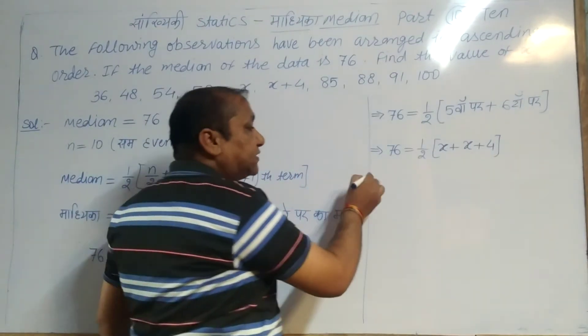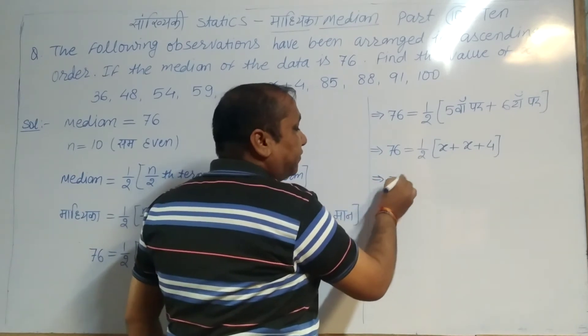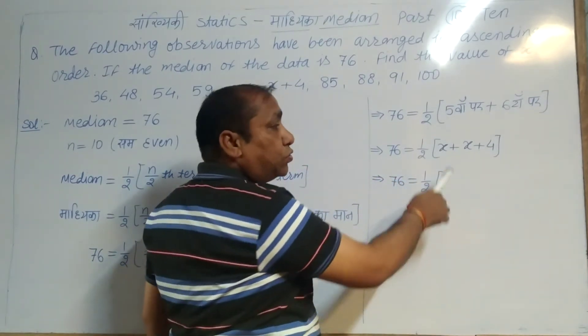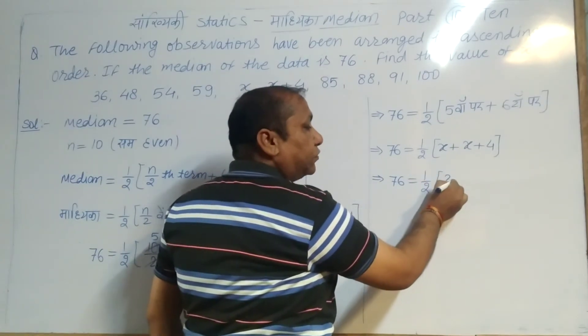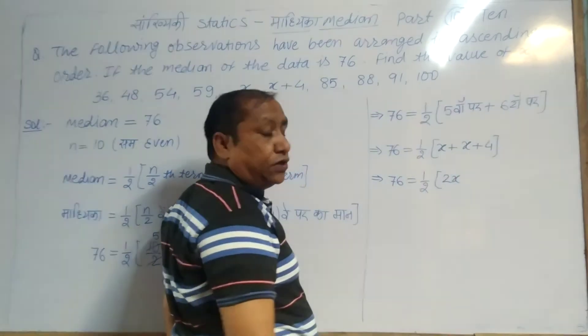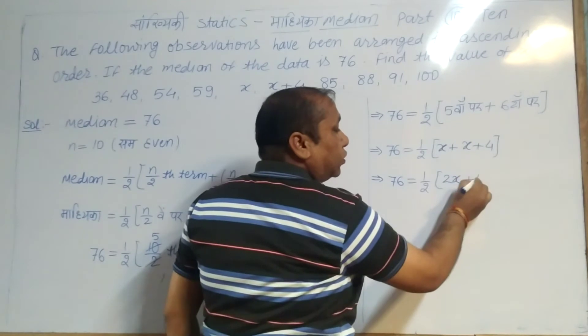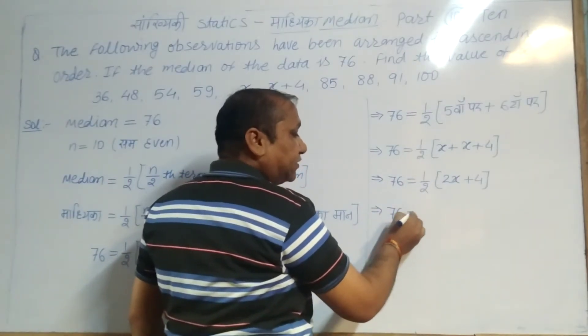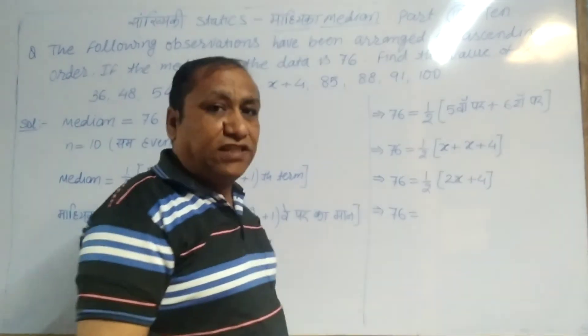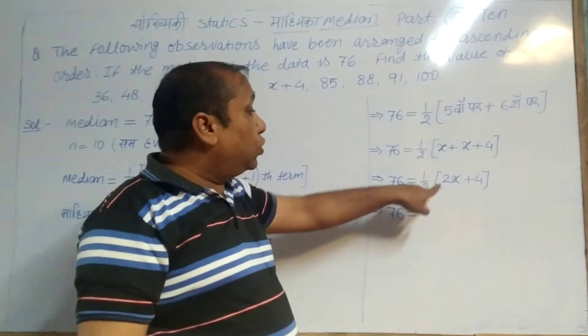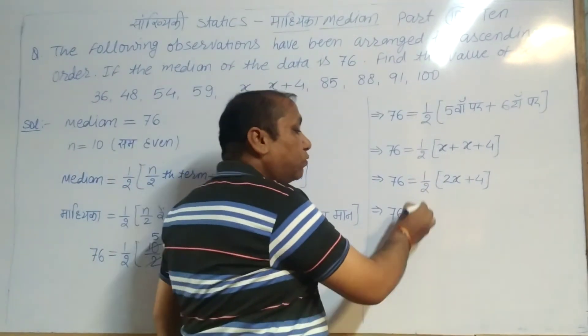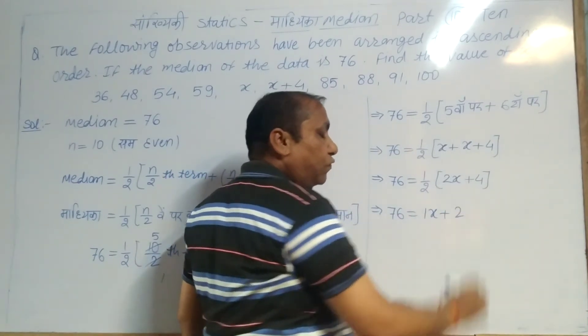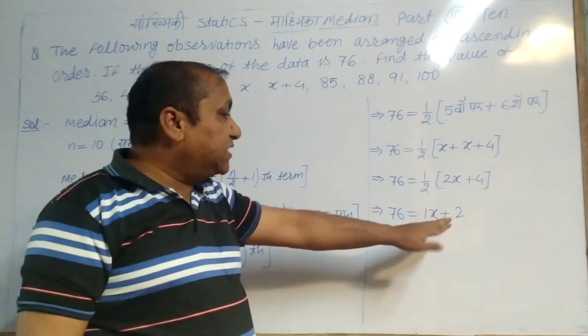So 76 equals 1/2 times (x plus x plus 4). This simplifies to 76 equals 1/2 times (2x plus 4), which equals x plus 2.